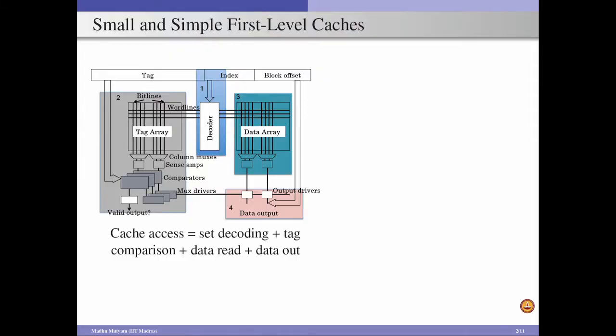Cache access consists of set decoding, tag comparison, data read, and data out. Tag comparison involves reading the tag array and comparing it with the tag in the address of the memory request. If the size of the cache is large, word line length and bit line length increase, and the decoder width can increase, causing overall access time to increase.